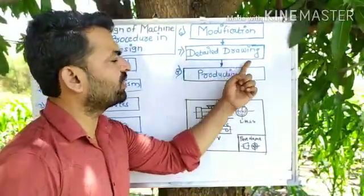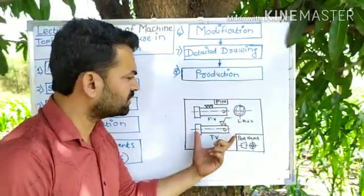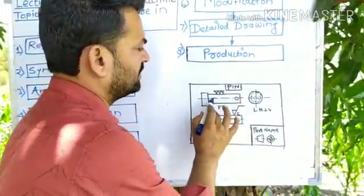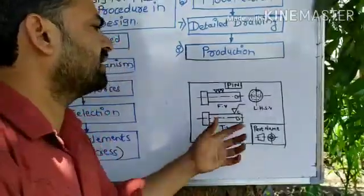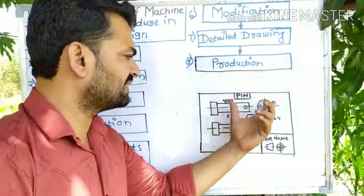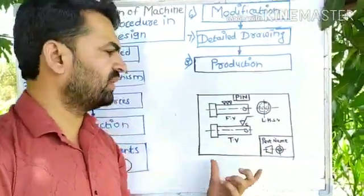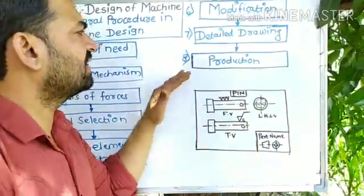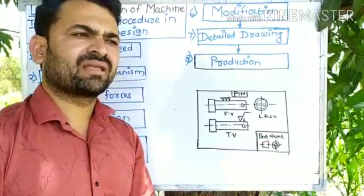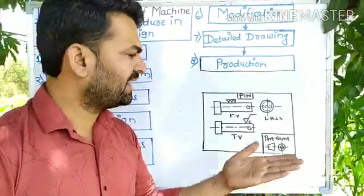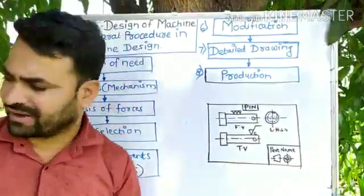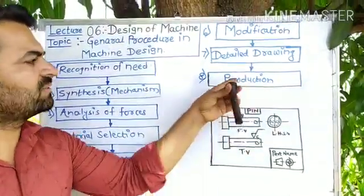The second-last step, step 7, is detail drawing. The designer draws a detailed drawing of the component — including the front view, top view, and side view of the pin — with tolerances and geometrical features so that a production engineer can easily understand it. Step 8 is production: the drawing is sent to the manufacturing department, where the production engineer sets up the machine according to the drawing and produces the component, giving us the final product — the pin.